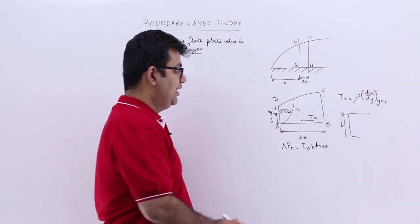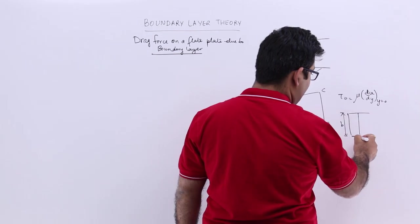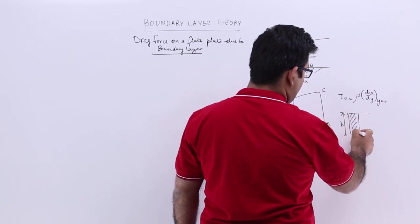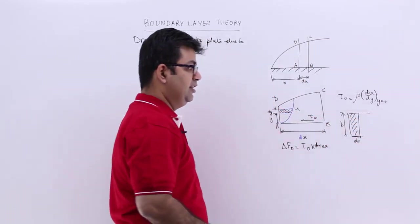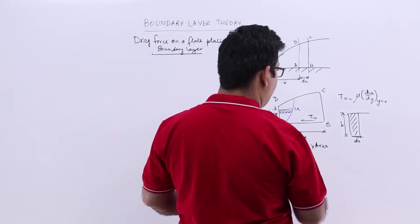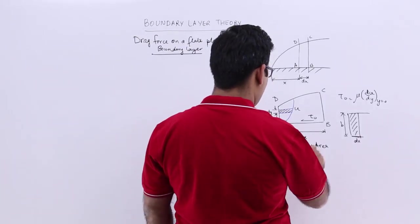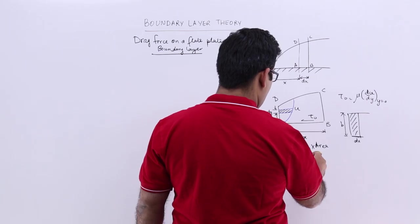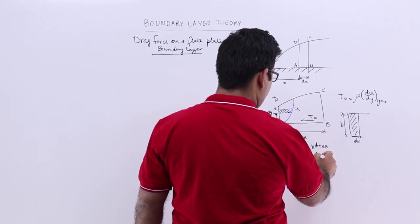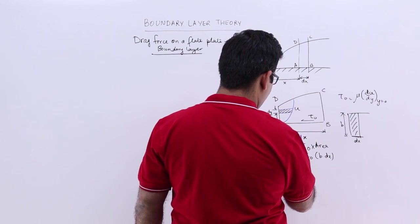The area would be the plate width b times the small length dx, since that is the area over which the shearing is happening. So we will have δFd equal to τ₀ times b times dx.